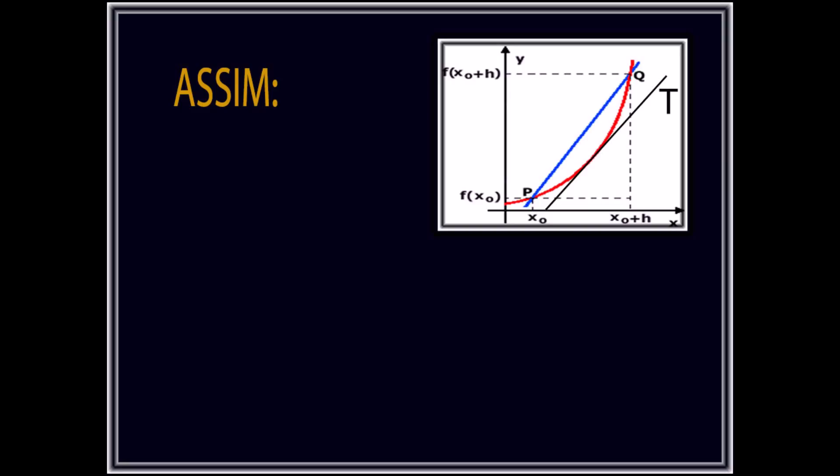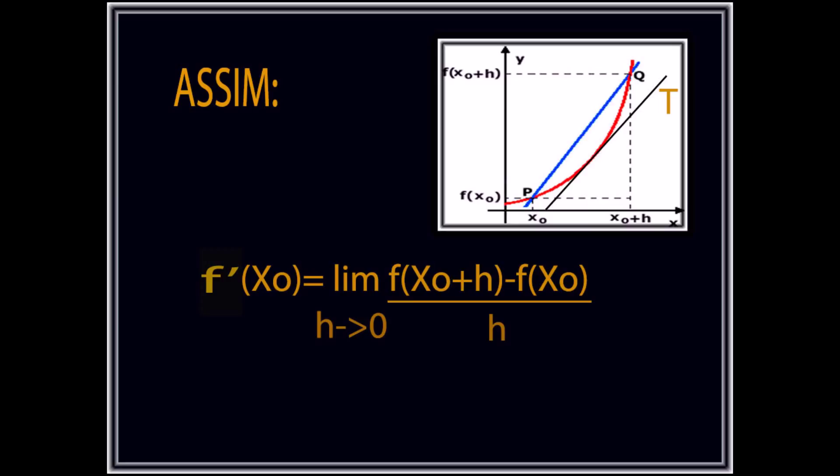Assim, a função limite de x0 com h tendendo a zero do quociente entre a variação do espaço pela variação do tempo resulta na velocidade instantânea.